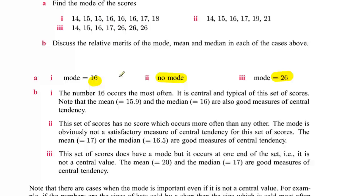Now in this particular case it says 16 occurs the most often and there it is there, you can see that it does. It's central and it's pretty typical of all of these scores. Now the average it says is 15.9, the median is 16, so you can basically say that the mode is a pretty good measure of central tendency.